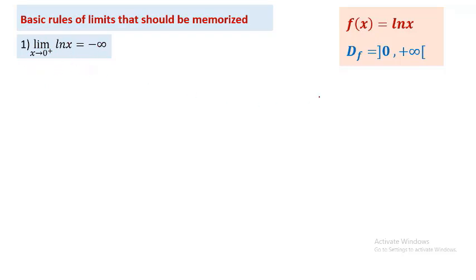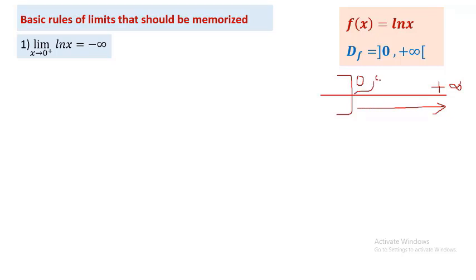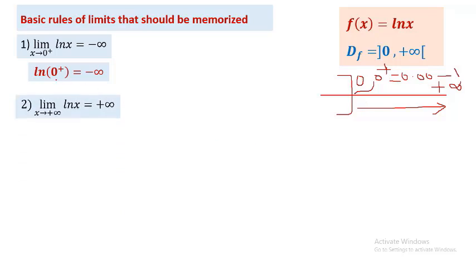What is 0⁺? If we graph the domain of ln x, which is the open interval (0, +∞) on the number line, 0⁺ is the number very near to 0 but from the right — for example, 0.0001. This rule is abbreviated as ln(0⁺) = −∞.